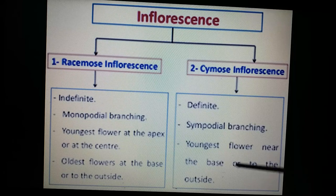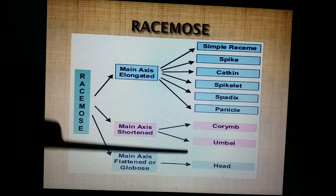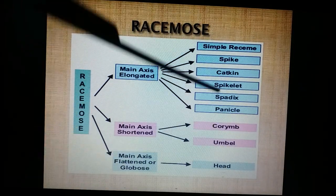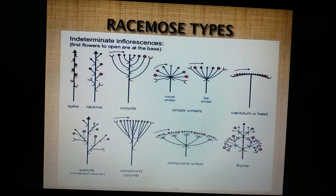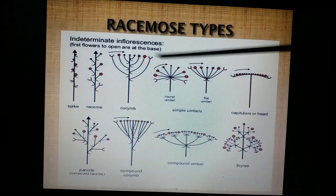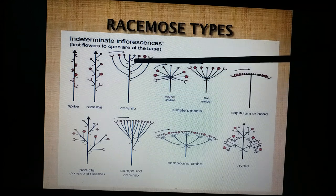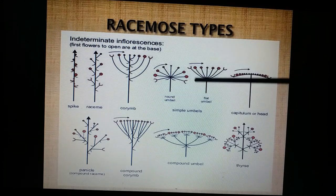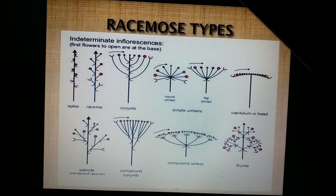The various types of racemose inflorescence include the simple raceme, the spike, catkin, spadix, corymb, umbel, and head. Let us see one after the other.